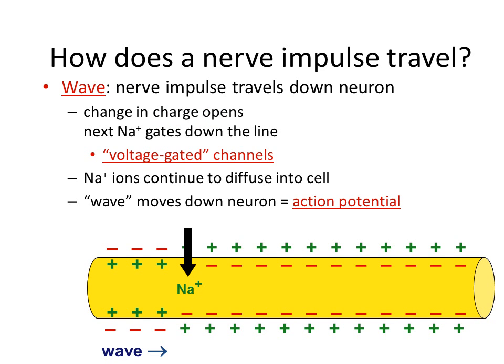Nerve impulses travel via wave — that is how nerve impulses travel down neurons. Nerve impulses are just the opening of sodium channels as they trigger the next one and send the message down the line. A change in charge opens the next sodium channel down the line, and this is called a voltage-gated channel. Voltage-gated channels are channels that open in response to a voltage, and then the next ones open because they are also voltage-gated channels, allowing the sodium to diffuse in through those that are open. This wave moves down the neuron and is called a nerve impulse, or an action potential.